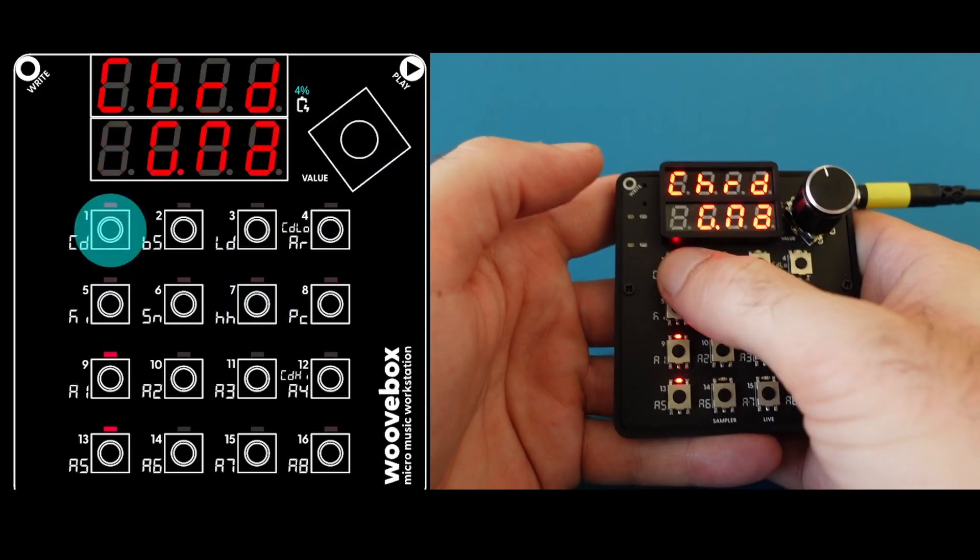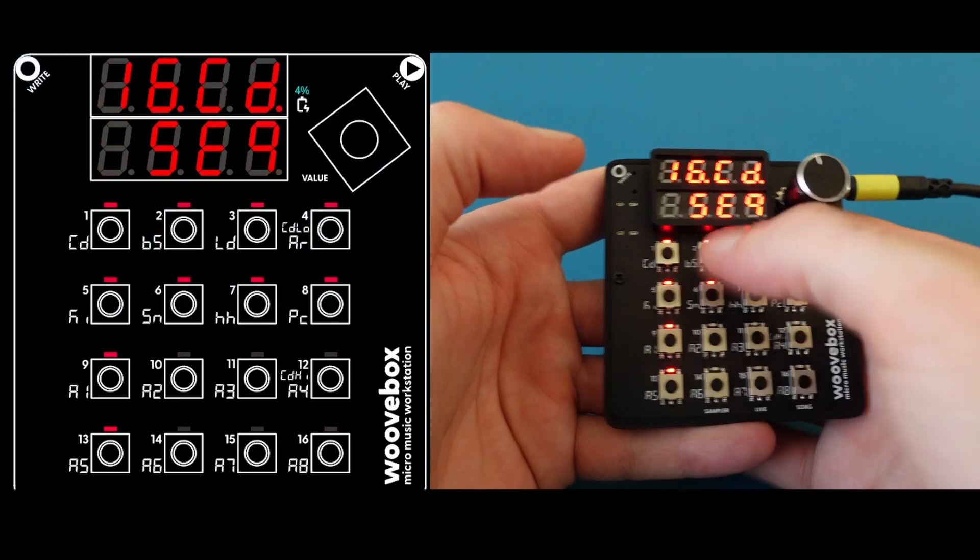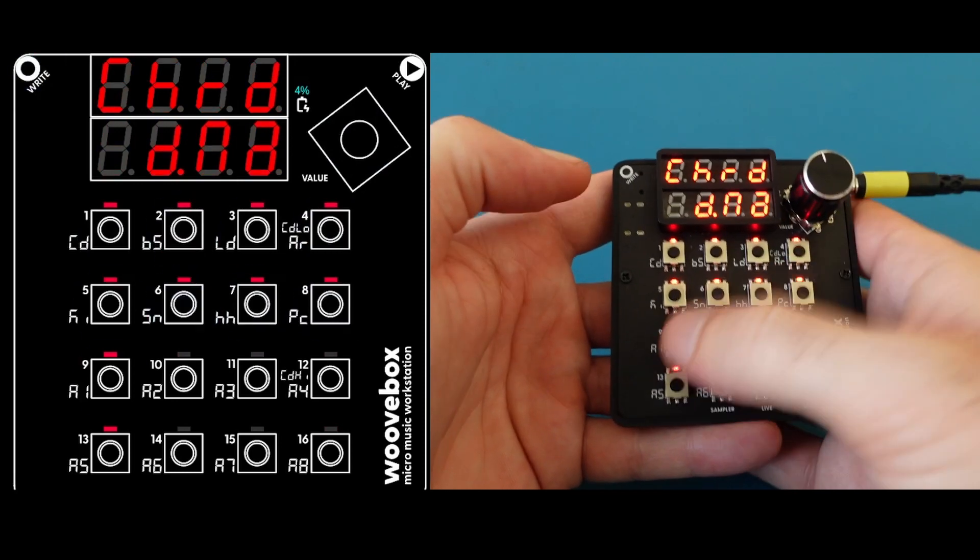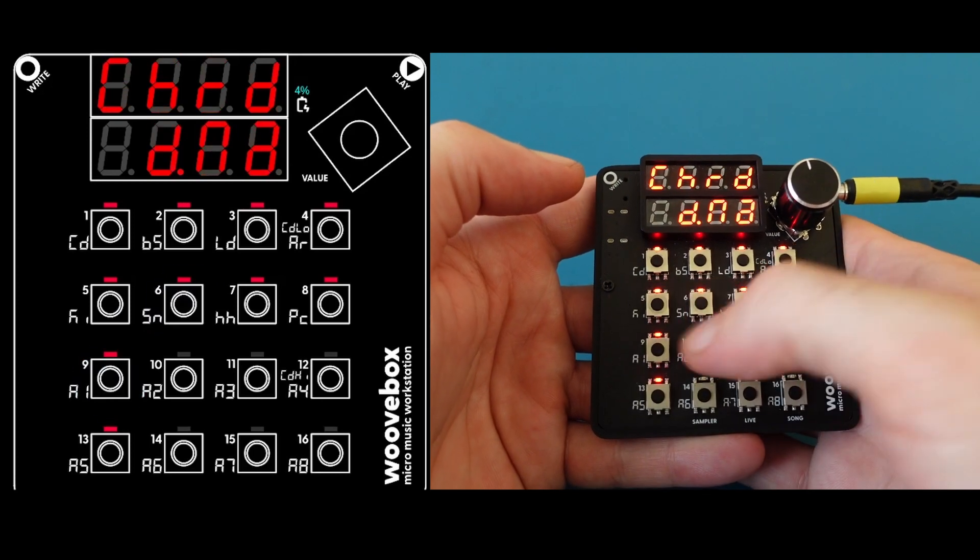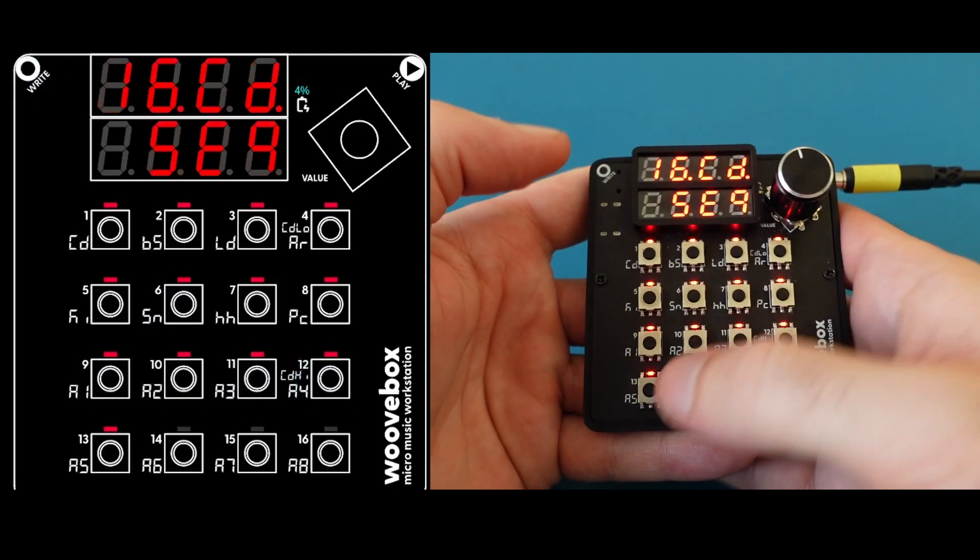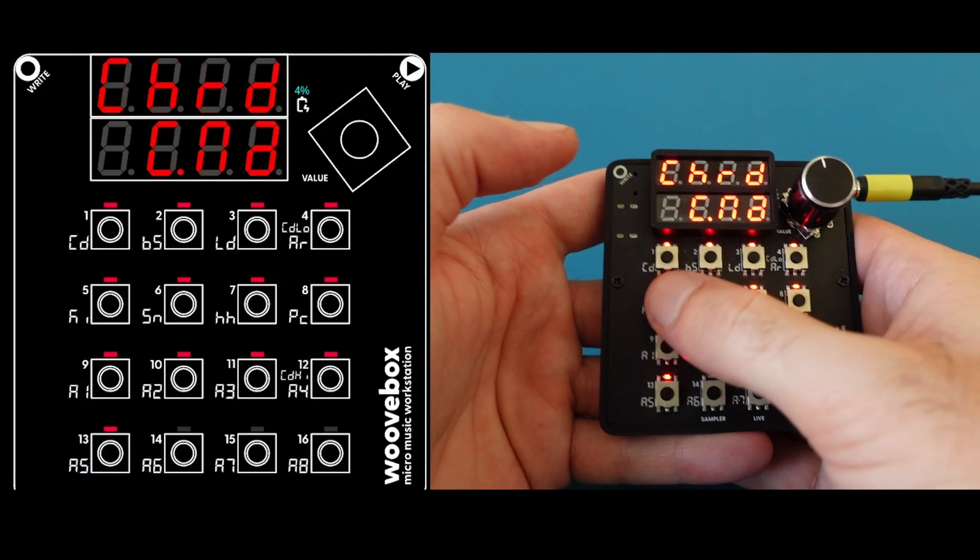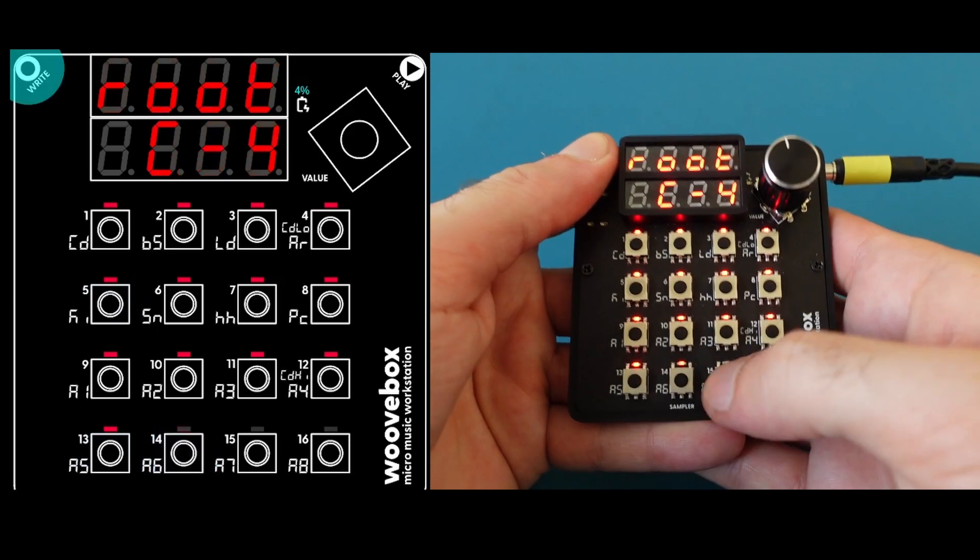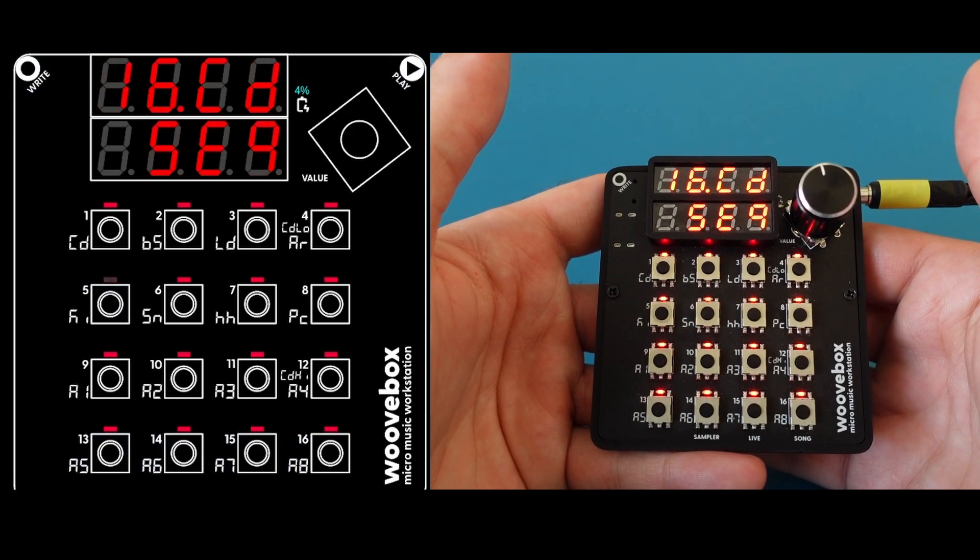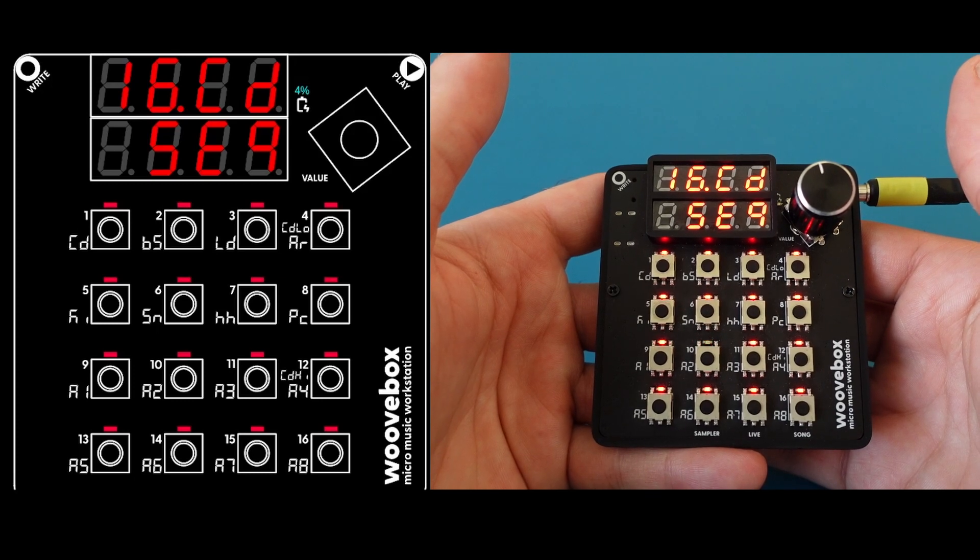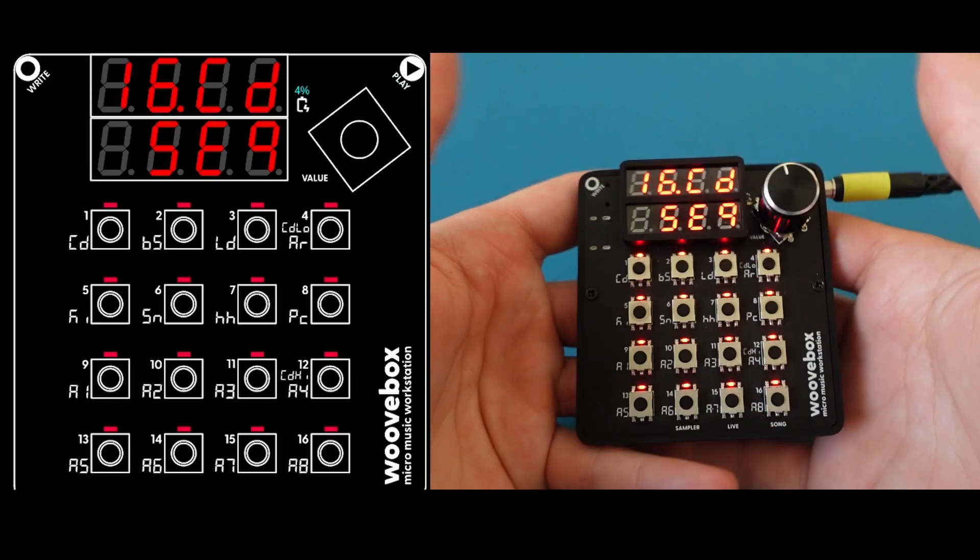If you want to know what note this is, you just hold it down. Oh, it's D. Okay. So it's this one. And then what's this one? That's a C. Nice. Very chill.